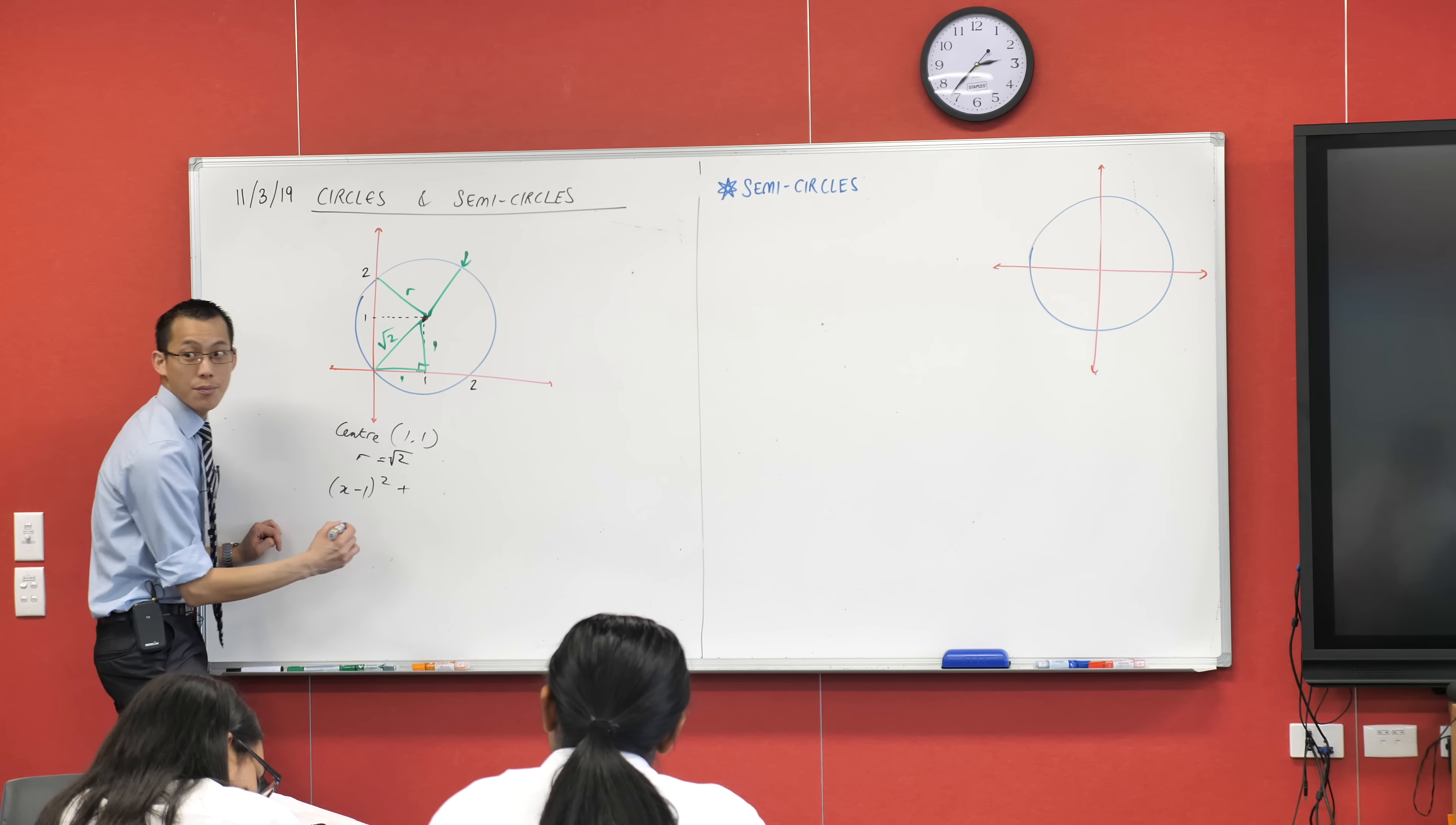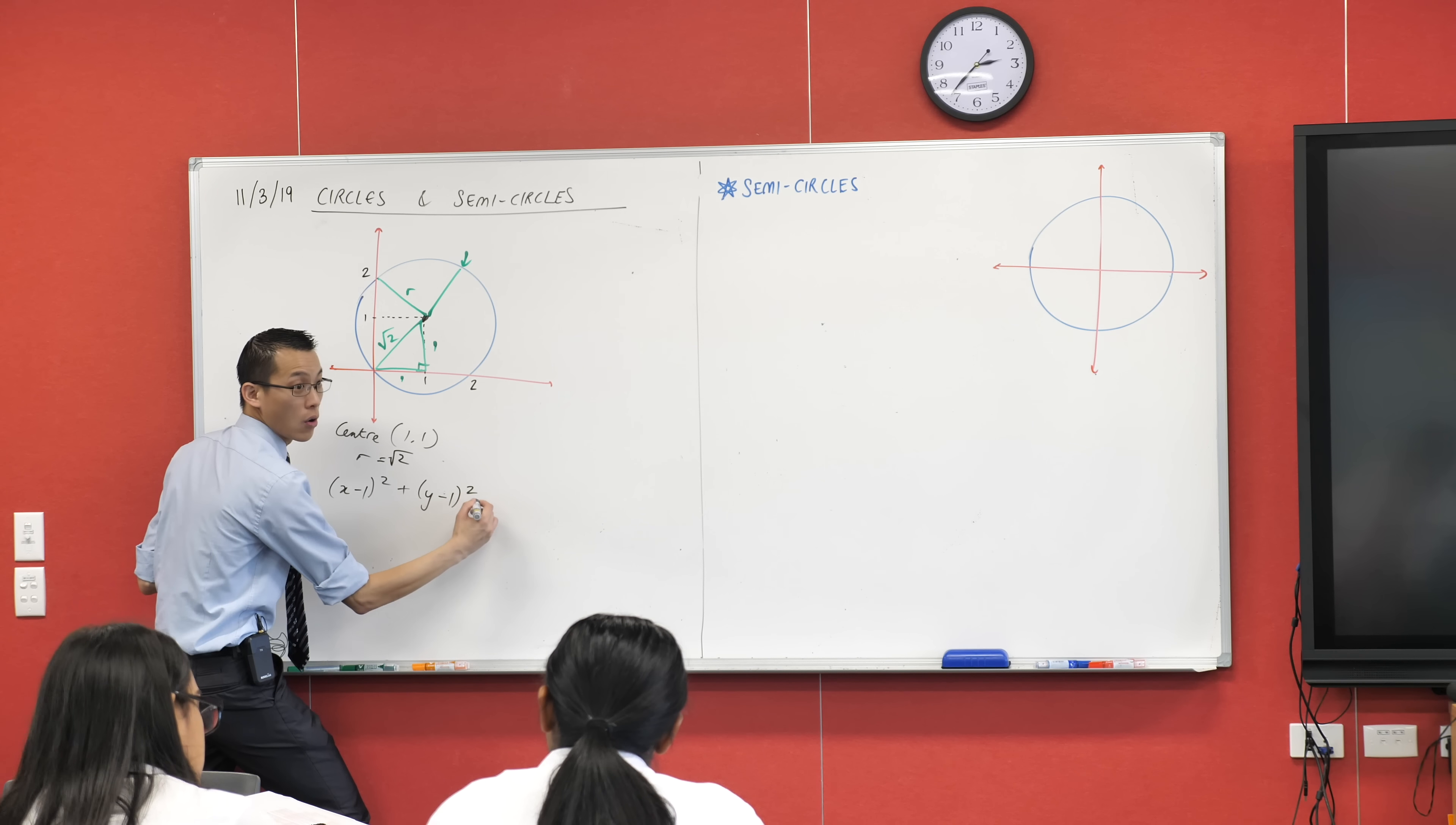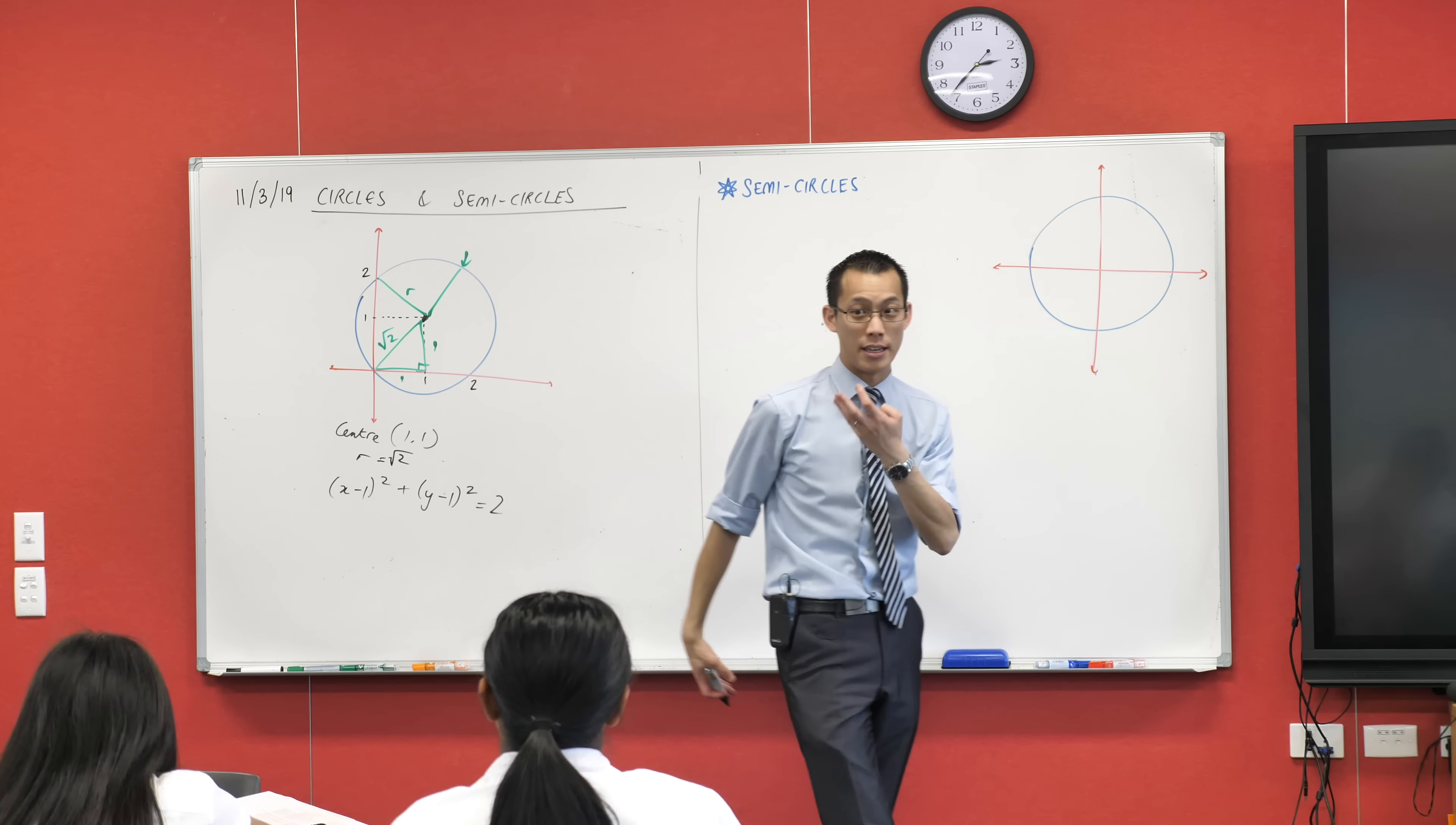Can someone else take over? Y minus 1, all squared. And then that equals 2? Just 2. Because the square root of the right-hand side, in my nice neat form, that's the radius.